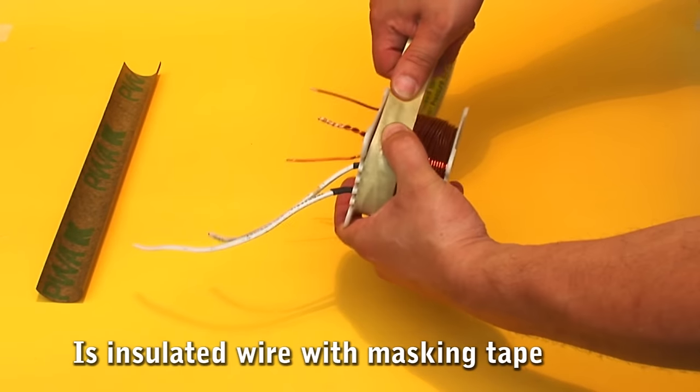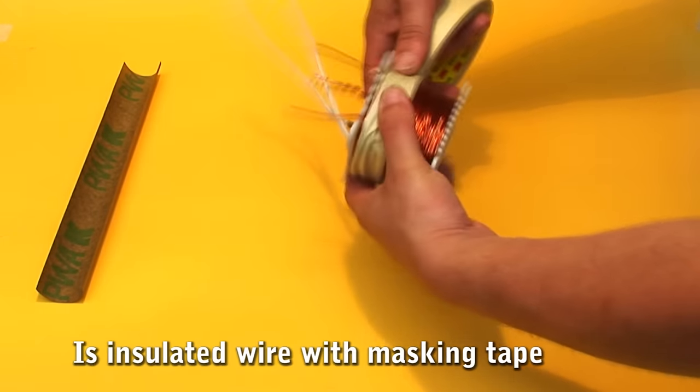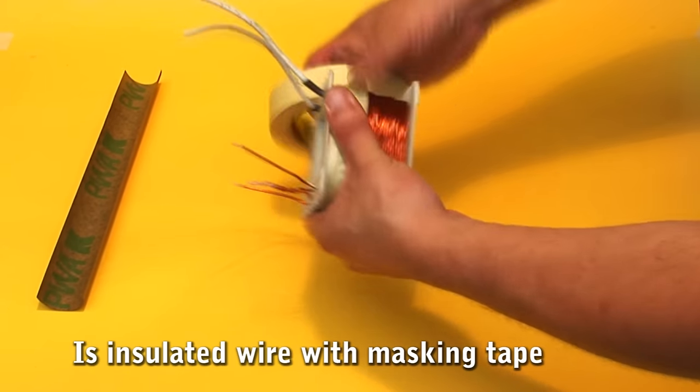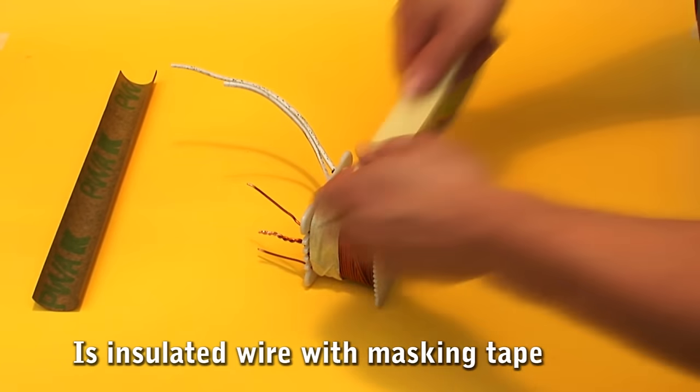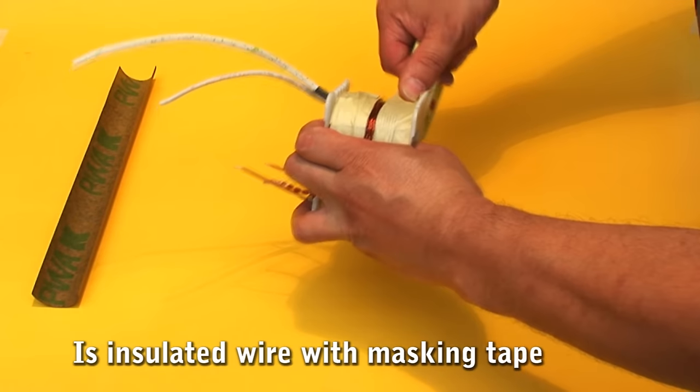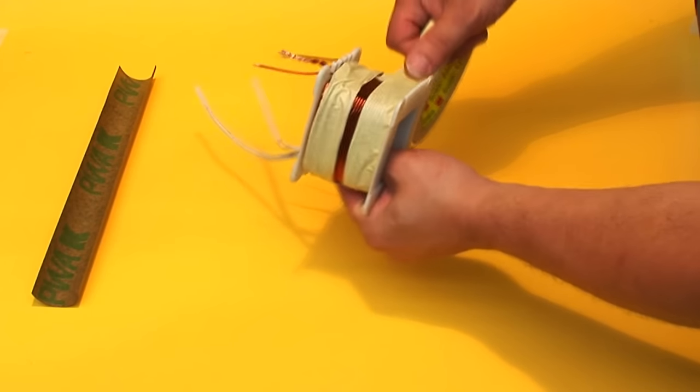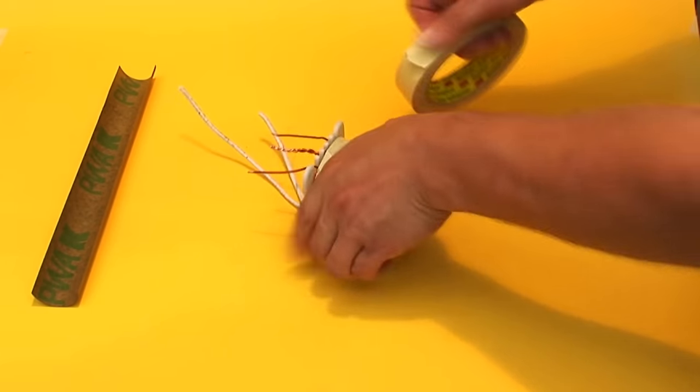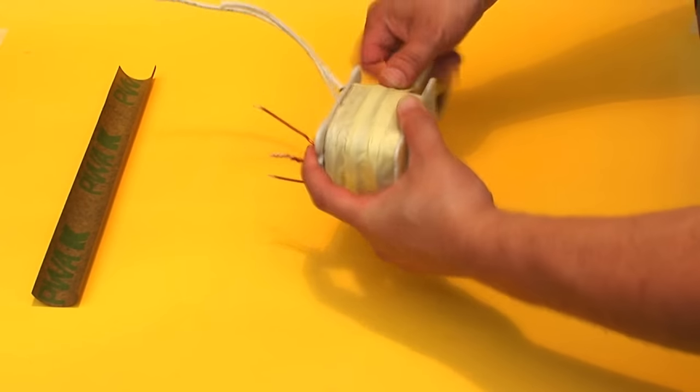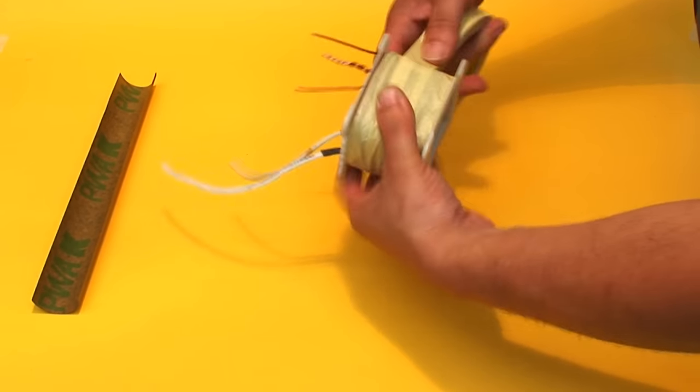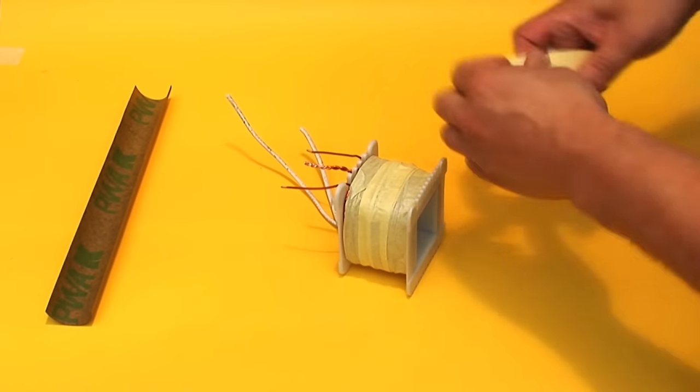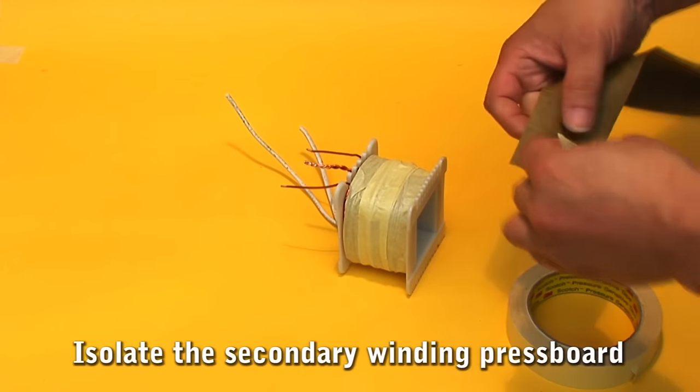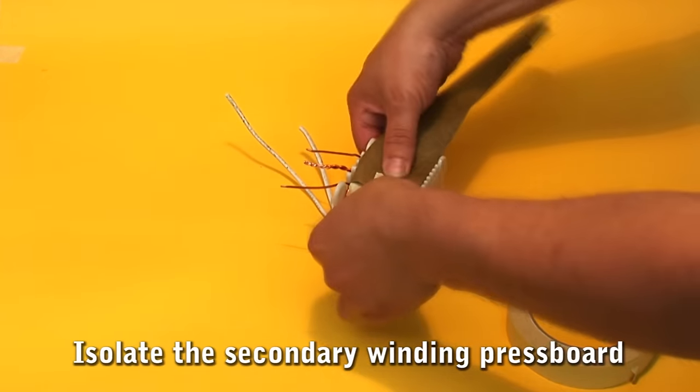Again, cover it with masking tape and wax paper. The secondary winding must be completely covered.